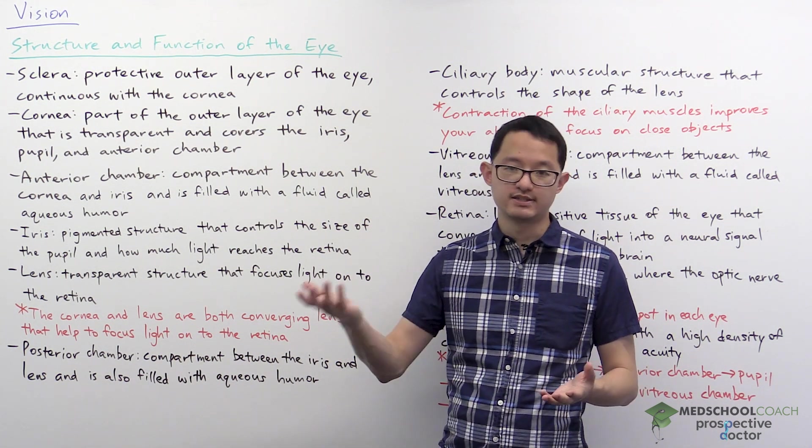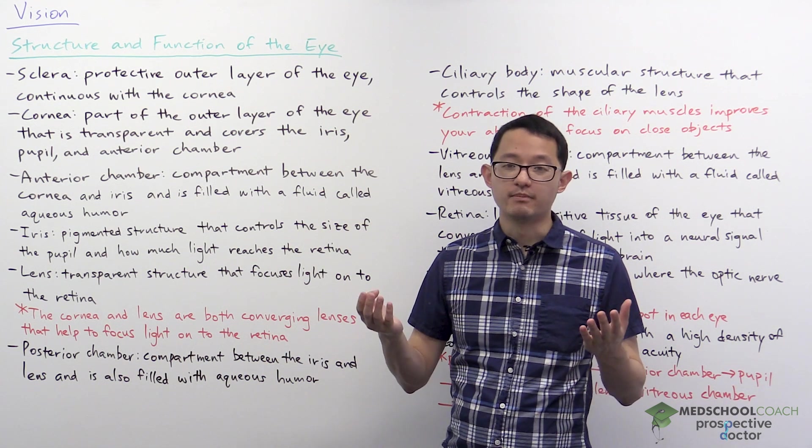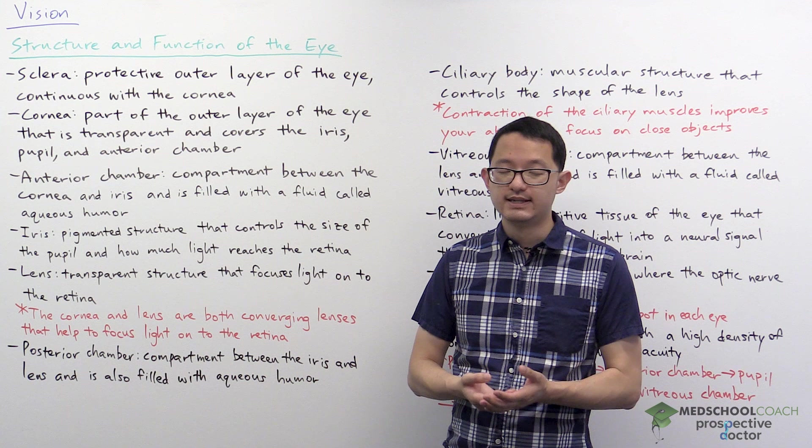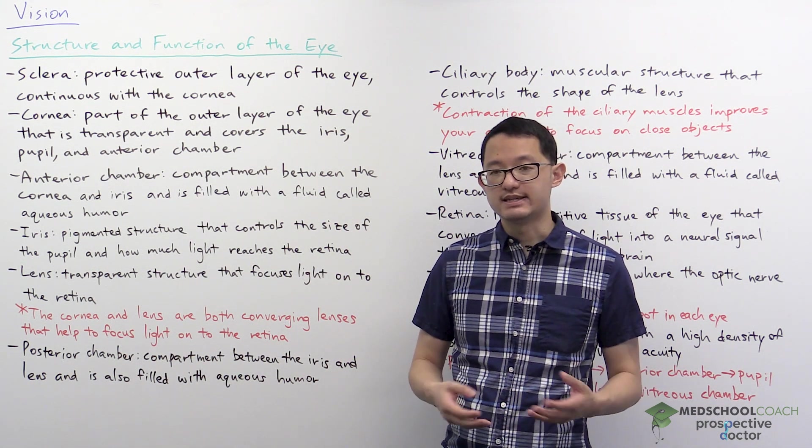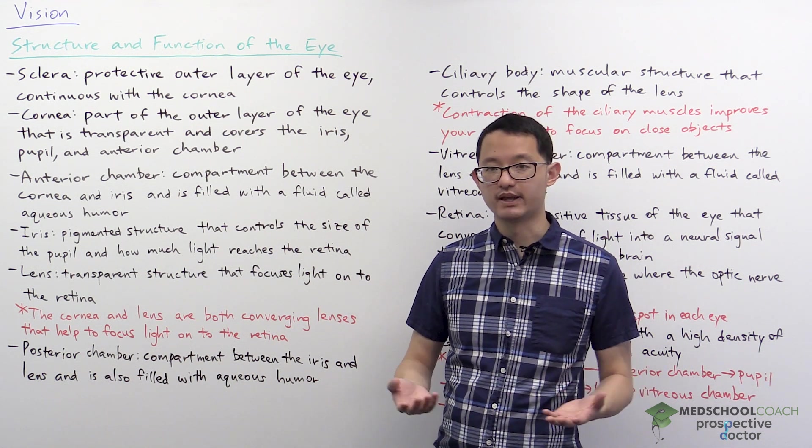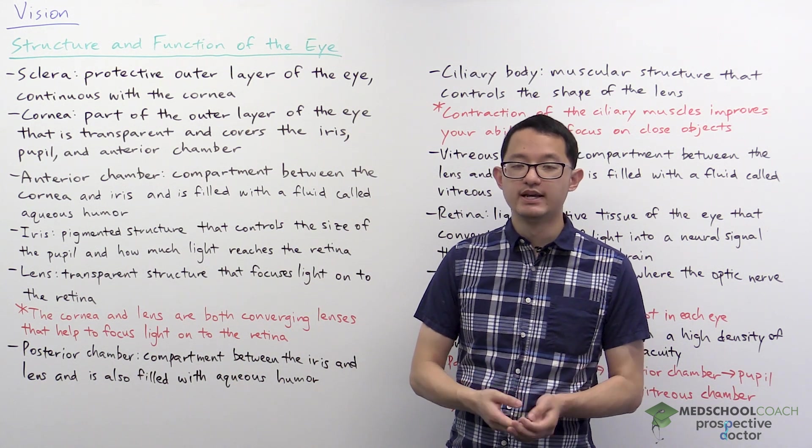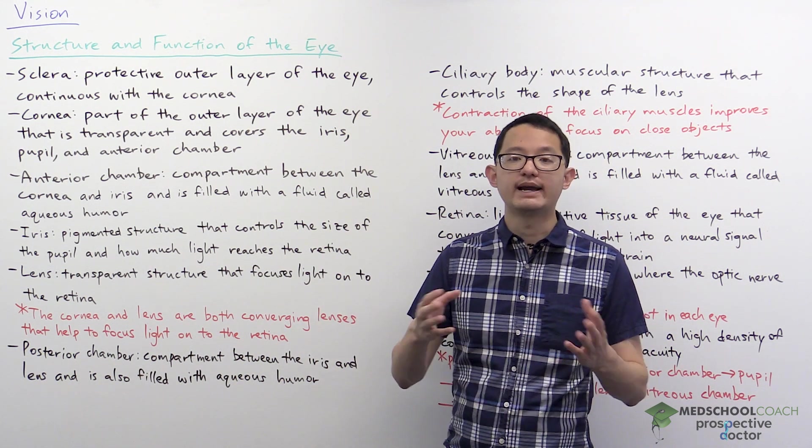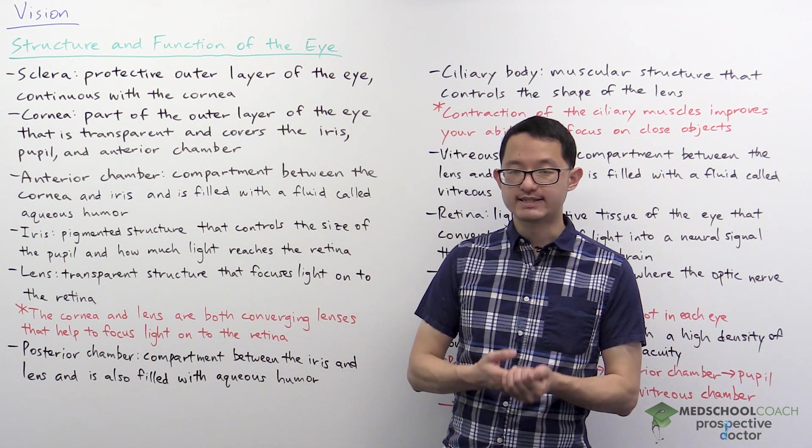So as examples, you can consider if you go outside and it's a very bright day, your pupils are going to constrict to reduce the amount of light that enters your eyes. And that's because if too much light enters your eye, you'll be blinded by all the light. The opposite is when you're in a dark environment, your pupils will actually become dilated to let in as much light as possible so you can better see in the dark.